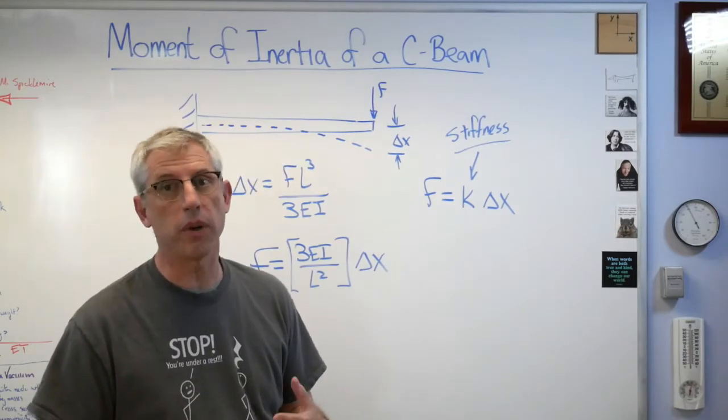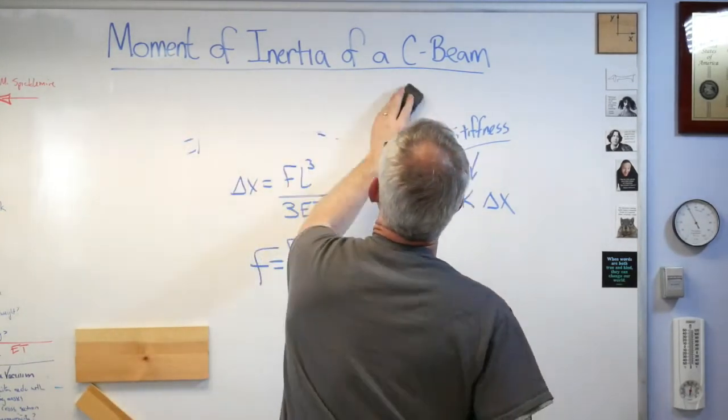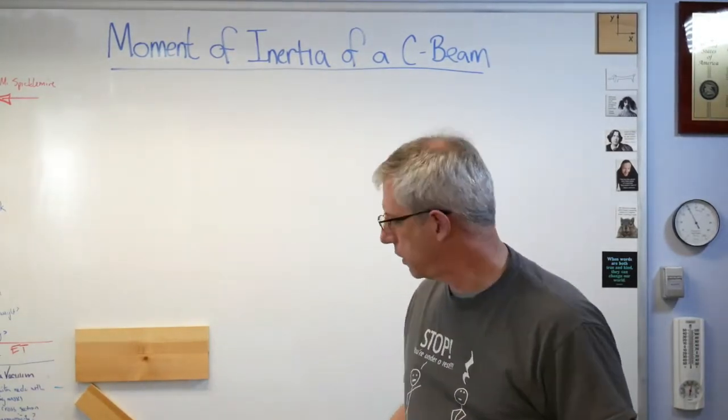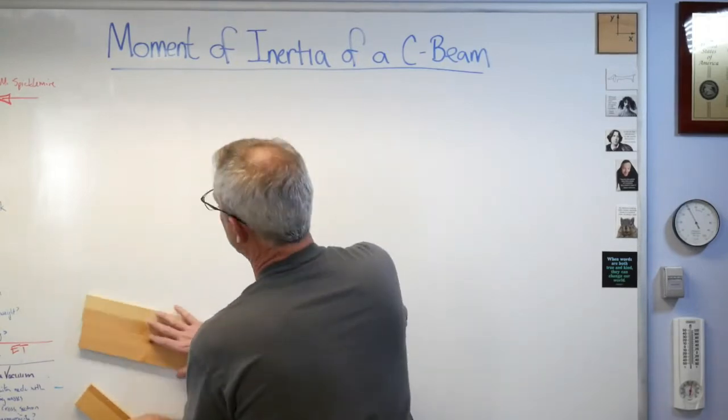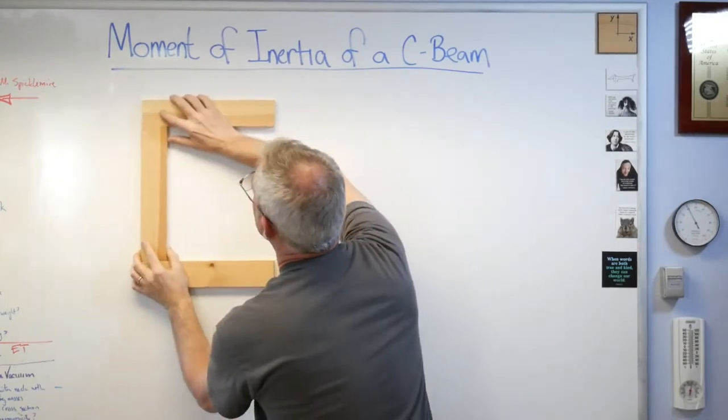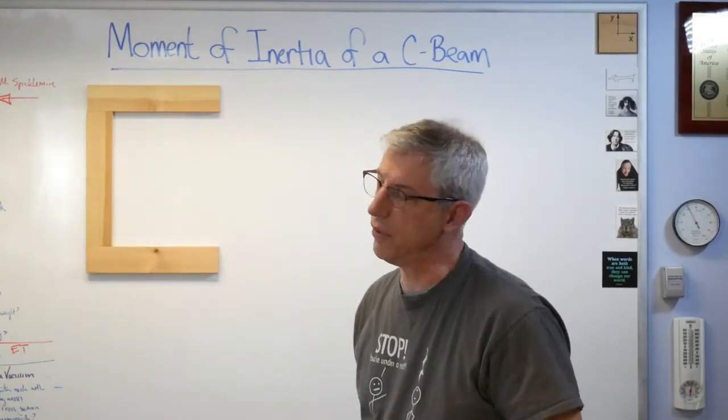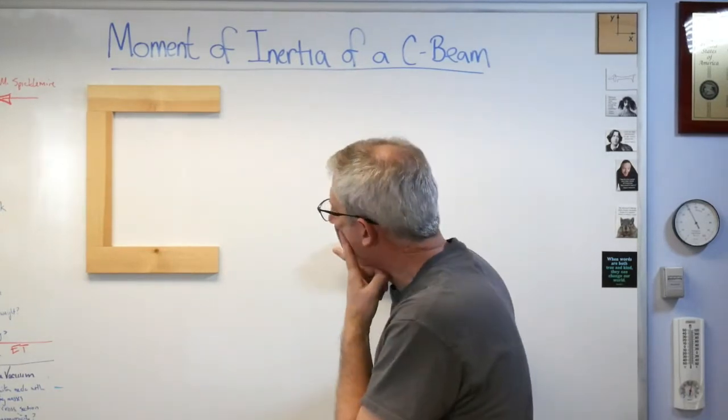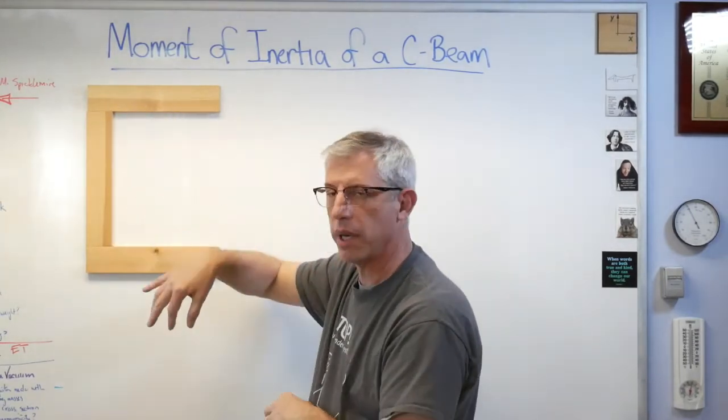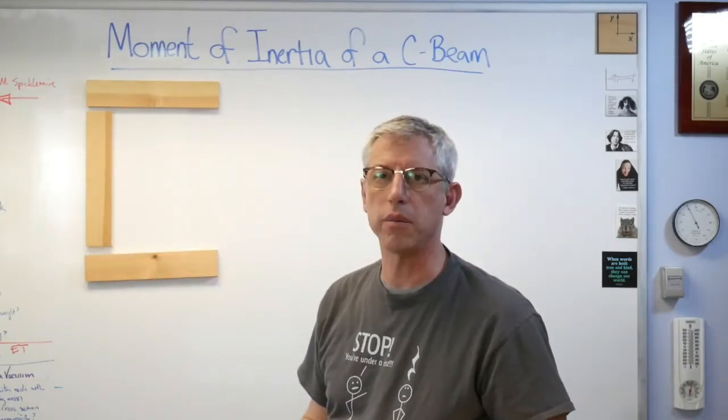So there's why you want I. It's the part of stiffness that's determined by the cross-sectional shape of the beam. Now that's pretty important. Now we have a good reason to calculate it. Let's try it. So I'm going to erase all this stuff. And let's do a cross-section. I made these little boards here with magnets on the back of it. So let's make ourselves a C cross-section.